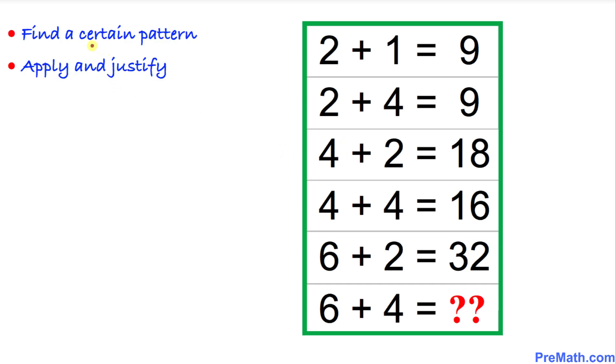Let's go ahead and start working on this problem. Here's the strategy: find a certain pattern, apply and justify. Now let's take a deep breath and start working on the very first numbers on the first row. Let's focus on these two numbers, 2 plus 1.